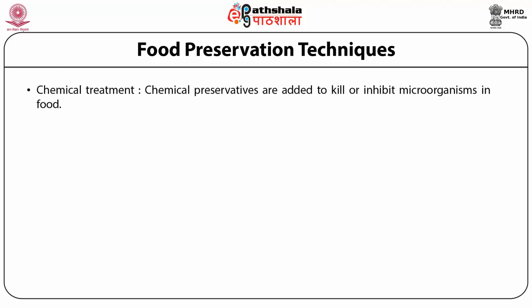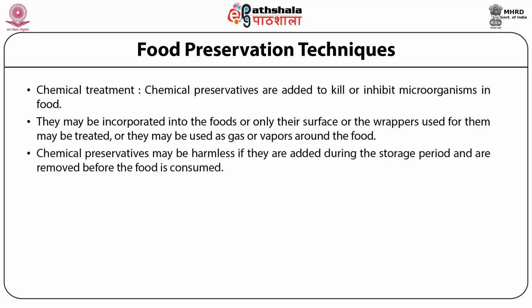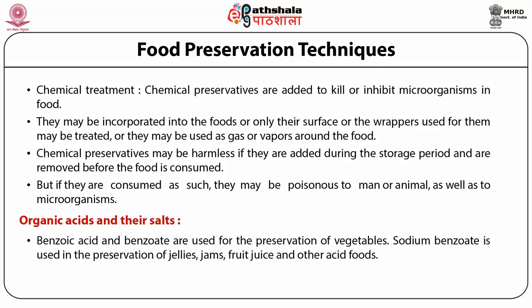Slight increases in moisture content will permit growth of various microorganisms such as molds, yeast, and bacteria. Chemical treatment: chemical preservatives are added to kill or inhibit microorganisms in food. They may be incorporated into foods or on their surface, or used as gases or vapors around the food. Chemical preservatives may be harmless if added during storage and removed before consumption, but if consumed directly they may be poisonous.